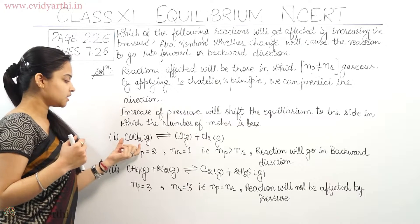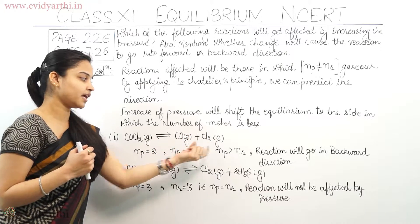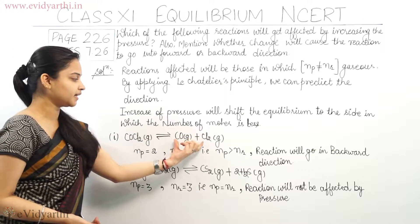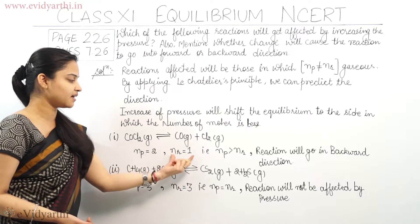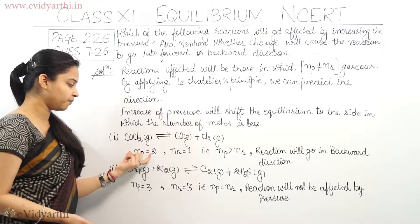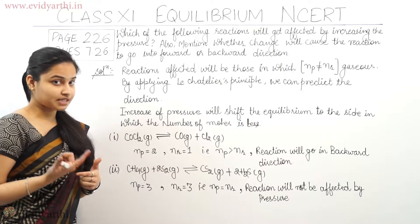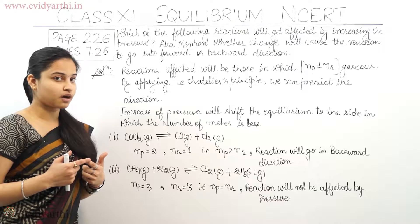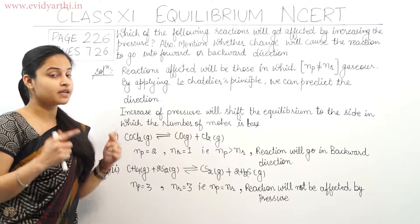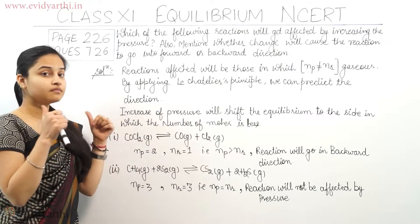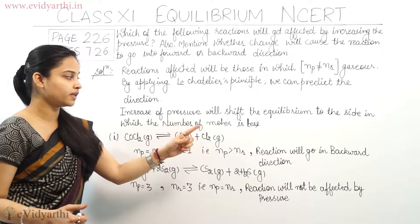The first reaction is COCl₂(g) in equilibrium with CO(g) plus Cl₂(g). The number of moles of the product is 1 + 1 = 2, so Np = 2. The number of moles of reactants, Nr = 1. Np is greater than Nr. Since pressure is increased, equilibrium will shift towards the side with fewer moles of gas — which is the reactant side. So the reaction will go in the backward direction.